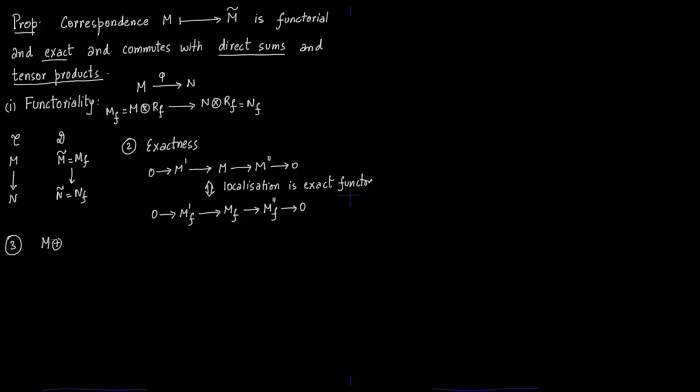Third is the tensor product will split over direct sum. When you are saying M direct sum M' then localize F, that means tensor it with RF. Similarly here, localize F means tensor it with RF. Then you bring RF to both the modules M and M'.